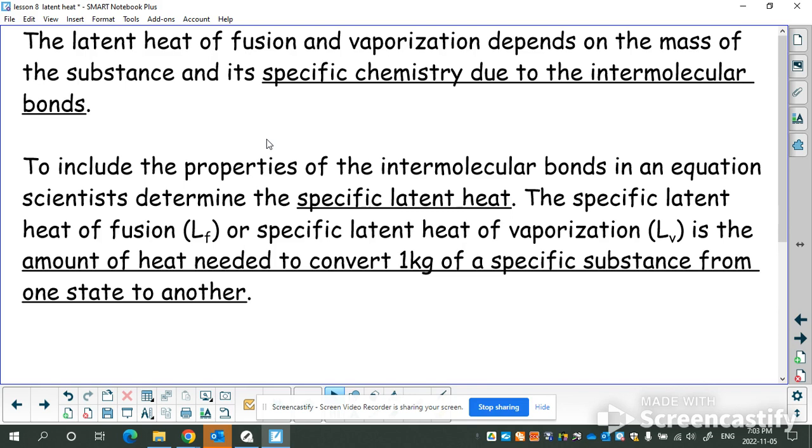There's one for the fusion. We call this LF for latent heat of fusion. And one for vaporization, LV, latent heat vaporization. This is the amount of heat needed to convert one kilogram to one state or the other. So LF is the amount of heat needed to convert one kilogram of that substance from a solid to a liquid. And LV is the amount to change one kilogram of substance from a liquid to a gas.